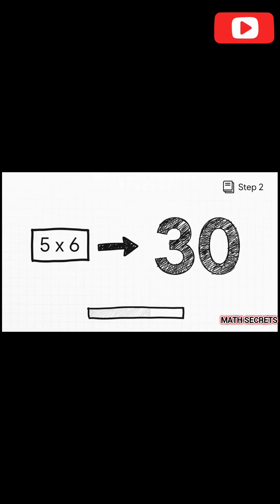Now for step two. Let's solve that first part. Pretty much everyone knows 5×6 is 30. That's the first easy part done. We're already halfway there.